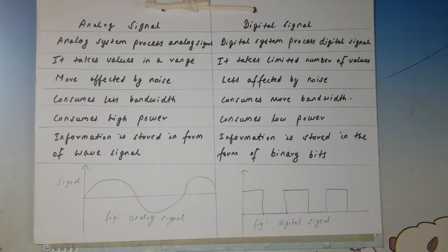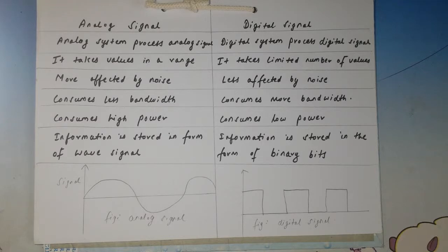As you can see, so many things like watches, thermometers, and televisions are now being digitalized. That is the key difference between analog signal and digital signal. Thank you, and if you like my video please subscribe to my channel.